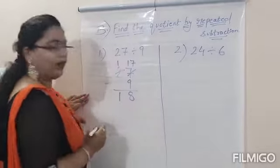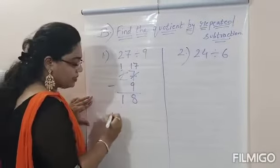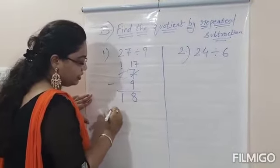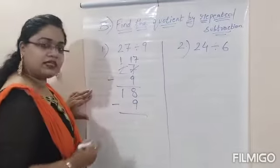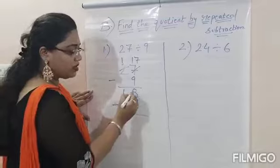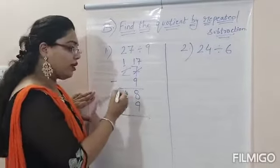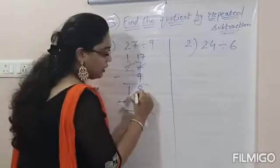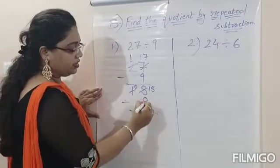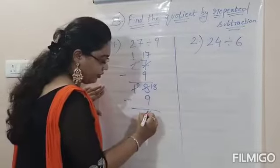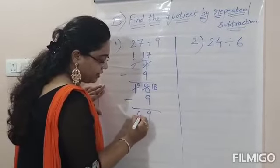8 and 1 make 18. Now we will subtract this 18 again by 9. 8 minus 9 is not possible because 8 is less than 9. So we will borrow from the next number: 8 will be written as 18 and 1 will become 0. 18 minus 9 is 9, and 0 as it is.